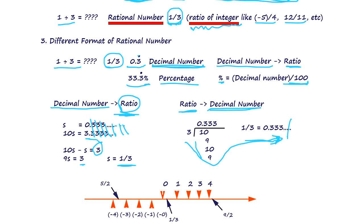Now, let's fill in the entire number line. We have five over two here, one over three here, nine over two here. We fill everywhere between the integers. So rational numbers fill up the entire number line.